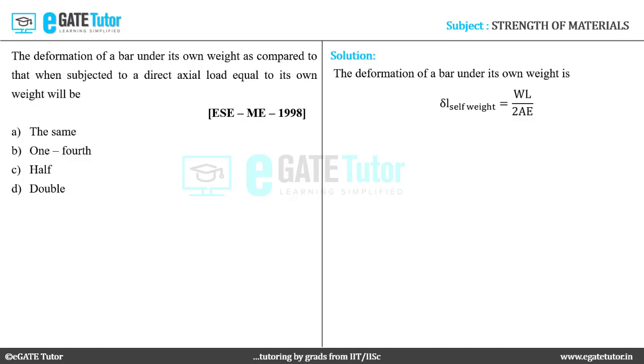We have to find out the deformation of the bar when the magnitude of axial load is equal to the weight W. In such cases, the deformation is delta L axial load equals WL by AE.